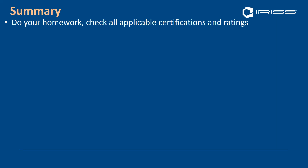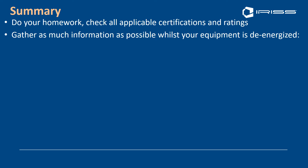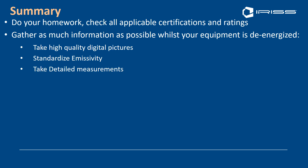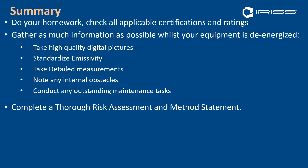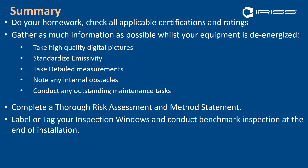In summary: do your homework, check all applicable certifications and ratings on the panels you're working on, and gather as much information as possible while equipment is de-energized. Take high-quality digital pictures, standardize emissivity, take detailed measurements, and note any internal obstacles — reinforcing on the door, cables running where you need windows — as this will dictate window placement and size. Conduct any outstanding maintenance tasks, complete a thorough risk assessment and method statement prior to the job, and label or tag your inspection windows.